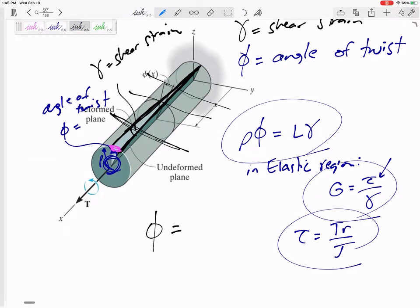Angle of twist, T L over G J. Angle of twist is T L over G J. And that is the angle of the cross-section, the angle that the cross-section twists due to a torque T.